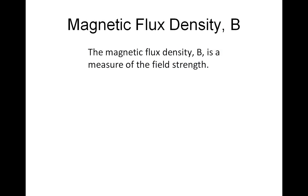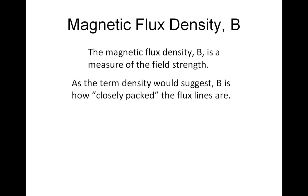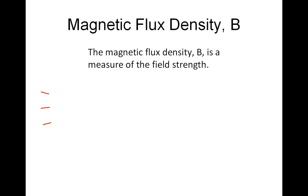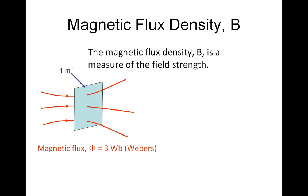Looking at the flux density, this is, if you like, field strength. As the term suggests, B is how closely packed the flux lines are. Here we've got three flux lines travelling through an area of one metre squared. So we have magnetic flux of three Weber, three field lines. The flux density is the magnetic flux divided by the area that gives us three Tesla.